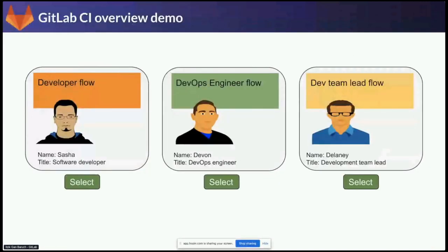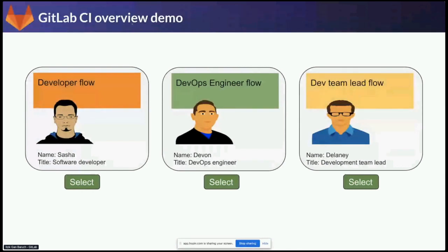We will start with the GitLab CI overview demo. I will present it via three use cases and three demo flows: one for the developer flow, the second is the day in the life of a DevOps engineer, and the dev team lead. I chose those three personas to demonstrate how GitLab can serve those personas and how we can do DevOps with GitLab.